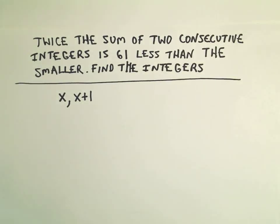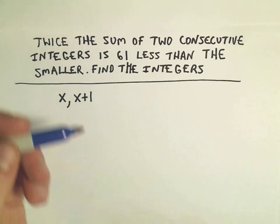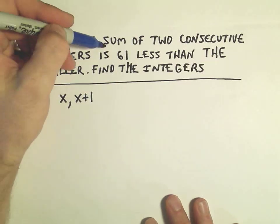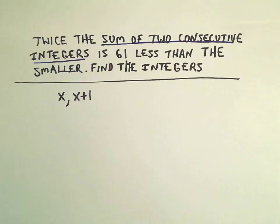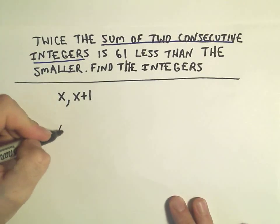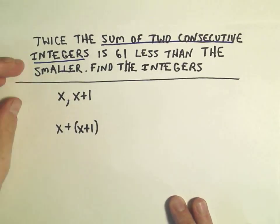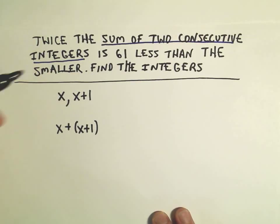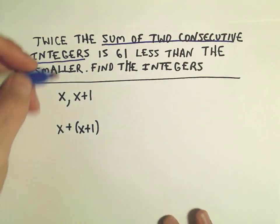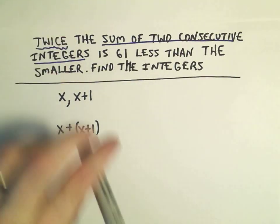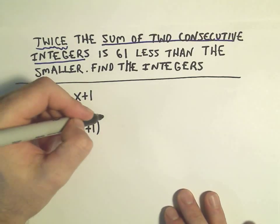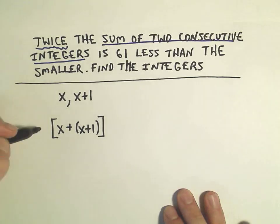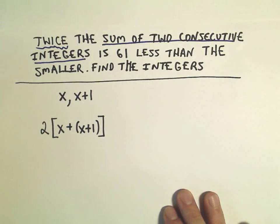Now we have to turn this English into something a little more mathy. It says we have to take twice the sum of our two consecutive integers. The sum of our two consecutive integers, well we could just add them together, x plus x plus 1. But then it says we have to take twice that. Be careful because we need to stick this whole quantity in brackets or another set of parentheses and multiply that by 2.